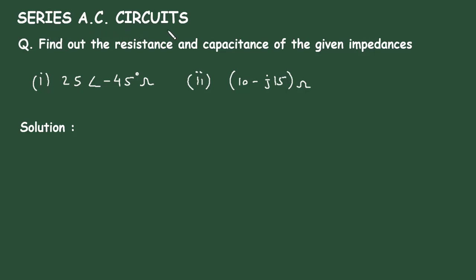Series AC Circuits question: find out the resistance and capacitance of the given impedances. For this impedance and for this impedance, we have to find the value of resistance and the value of capacitance.